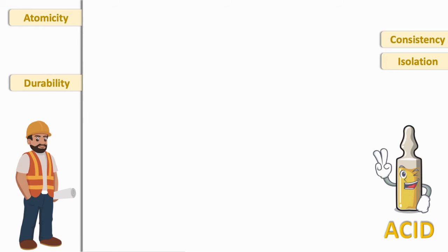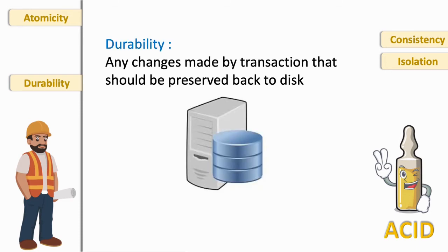It ensures that if something went wrong, it should not affect our database. So let's see what is durability. Durability says any changes made by transactions should be preserved back to the disk. Once transaction has been successfully completed, its effect should be persistent even if system crashes or power failure, or even if you shut down or restart the system. Your changes should be there permanently in the disk.